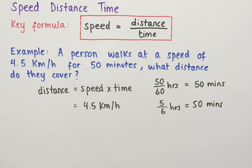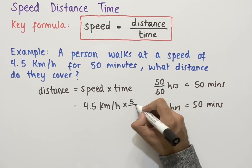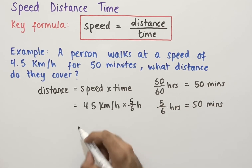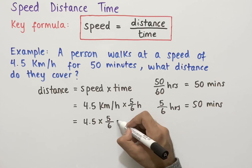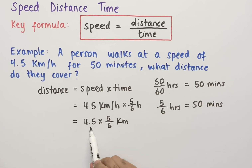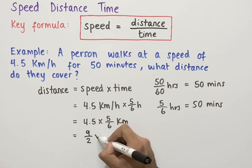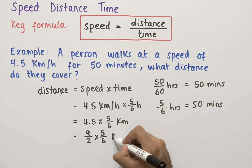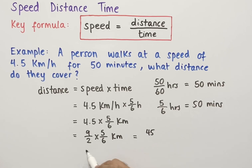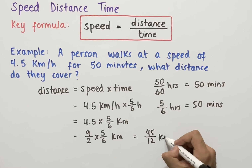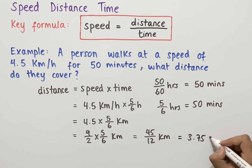Using this value, we get 4.5 kilometers per hour multiplied by 5 over 6 hours. The hours cancel, leaving 4.5 multiplied by 5 over 6 kilometers. Writing 4.5 as a fraction gives 9 over 2. Multiplying the numerators gives 45, and multiplying the denominators gives 12. Simplifying 45 over 12 gives 3.75 kilometers. So the distance covered is 3.75 kilometers.